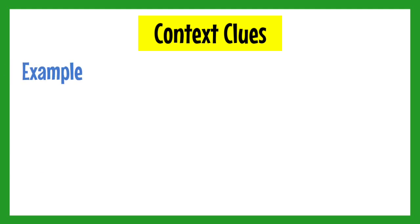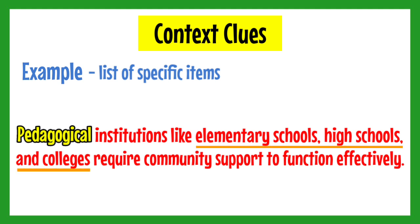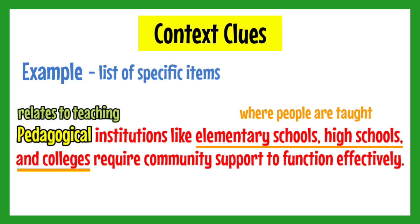Now let us have the E, which is Example. This means that specific items, such as in a list, provide clues to the meaning of the unfamiliar word. For example: Pedagogical institutions like elementary schools, high schools, and colleges require community support to function effectively. You need to figure out the meaning of the word pedagogical, and you are given a clue in the form of specific examples. These are elementary schools, high schools, and colleges — which are all schools. What is usually done in these institutions? Educating or teaching people. Therefore, pedagogical means something that relates to teaching.